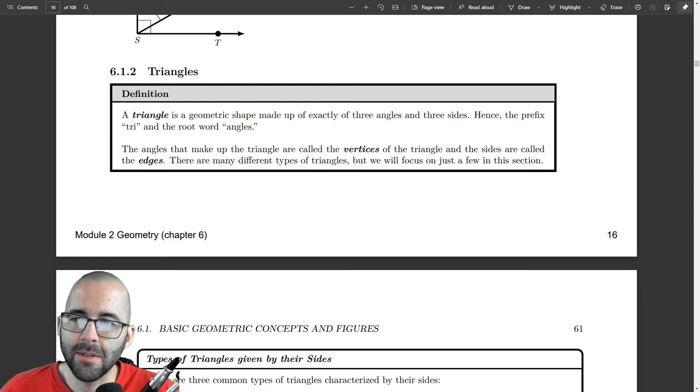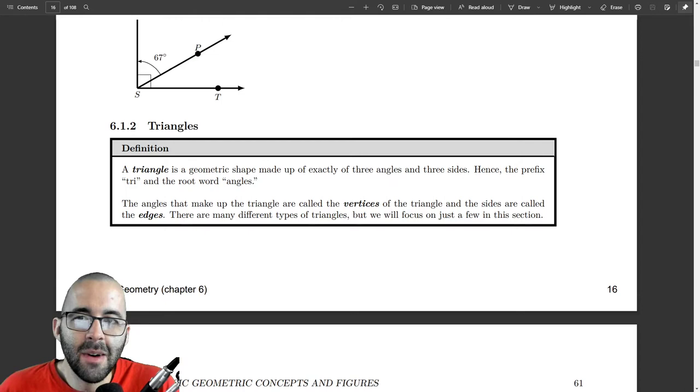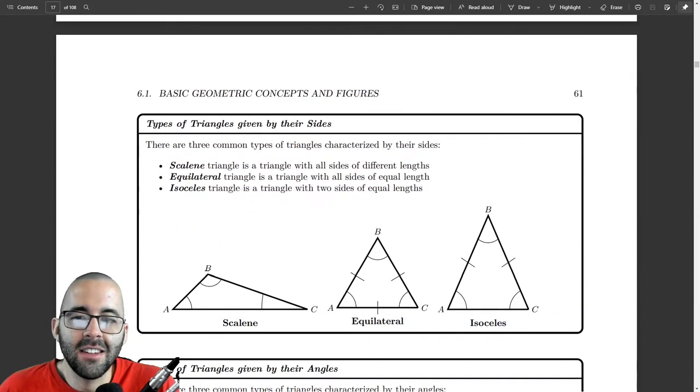Part 2, we're going to talk about triangles. You may know what a triangle is. There's a fancy definition here, but we're not going to read it. The angles that make up a triangle are called the vertices, and the sides are called the edges. So we're going to talk about vertices and edges a lot.